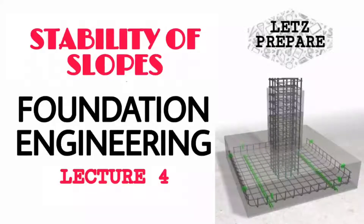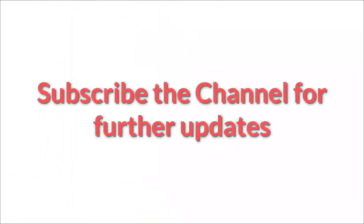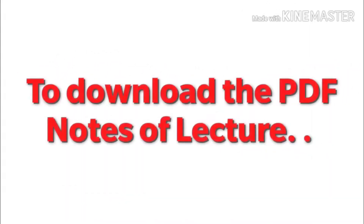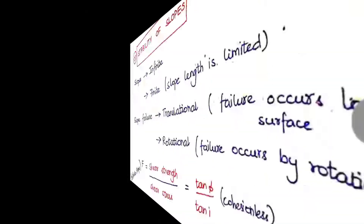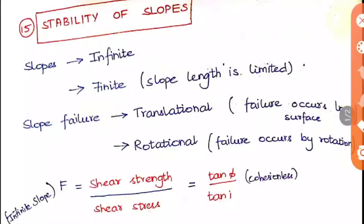Let's prepare on the stability of slopes. Slopes are categorized into infinite slope and finite slopes. An infinite slope is a slope of a semi-infinite soil mass where the soil properties for all identical depths below the soil surface will be constant. In a finite slope, the slope length is limited to a limited area only — like earthen dams, which are of finite slope.